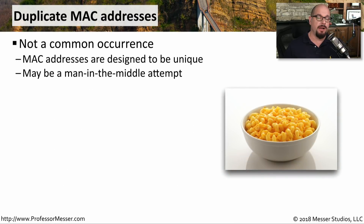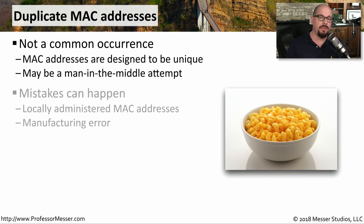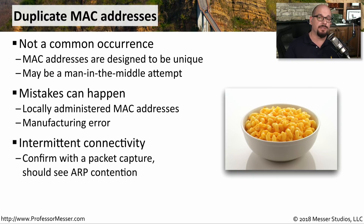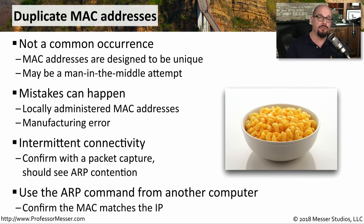One type of duplicate address you don't see very often is a duplicate MAC address. MAC addresses are burned into the network interface card, and it's very unusual to see two cards with exactly the same MAC address. If you do see a duplication, it could be a misconfigured manual MAC address, or man-in-the-middle attacks that spoof existing MAC addresses — so check for security concerns. Usually the problem is more benign, such as a locally administered MAC address misconfiguration or a manufacturing error. Devices with duplicate MACs may have intermittent connectivity because the switch is confused about where that MAC address is on the network. To confirm a MAC address, ping the IP and then look at your ARP cache to see what MAC address is associated with that IP.